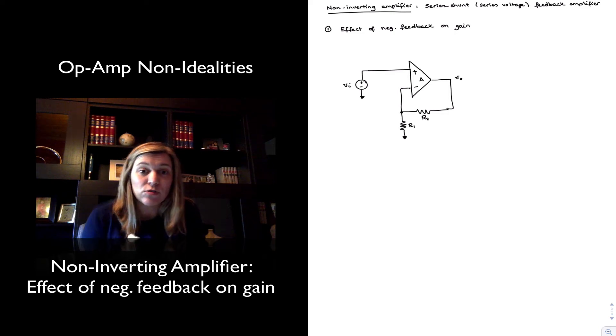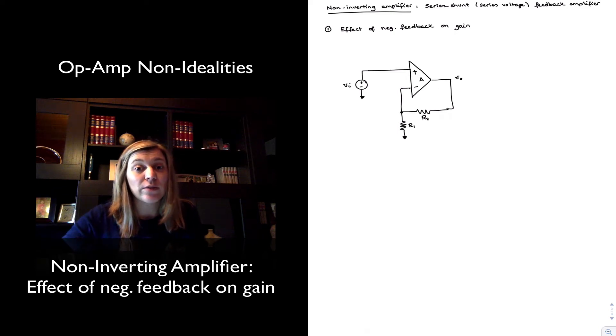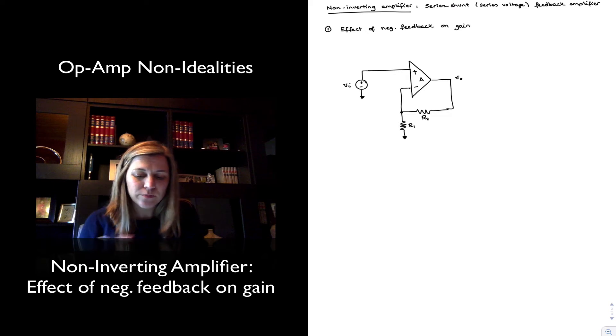Also, series voltage because it gets fed at the input in series with input signal, and what we sample at the output is a voltage. You can go back and review the four types of negative feedback amplifiers: series voltage, series current, parallel voltage, and parallel current.